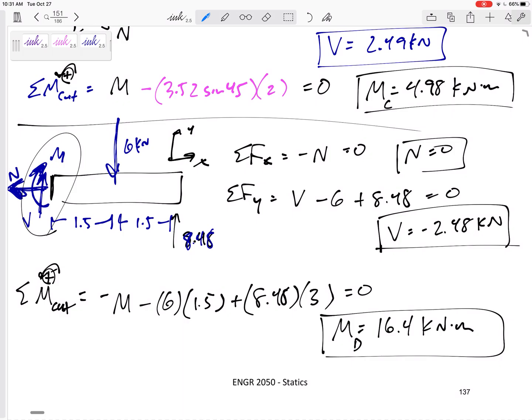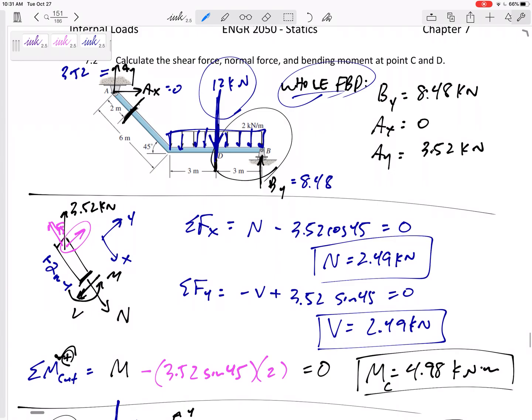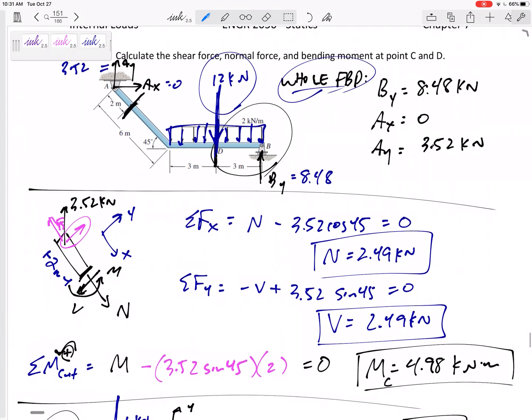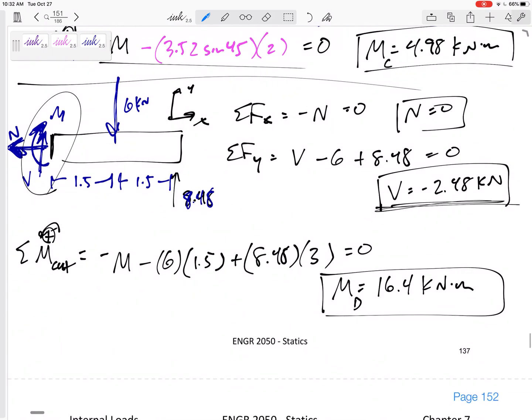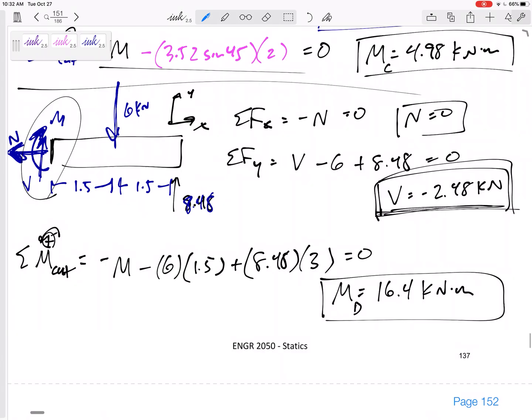All right. So let's kind of take a step back. Look what we did. Whole free body diagram to solve for AX and AY and BY. And then cut it, draw N, V, and M in positive sign convention, and then set those equal, sum those equal to zero. And then if my answer comes out negative, leave it as negative and box it in.